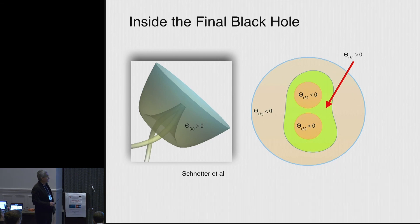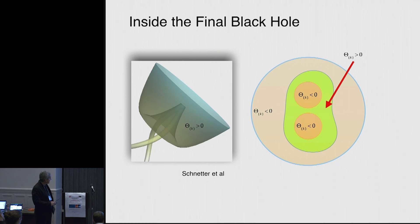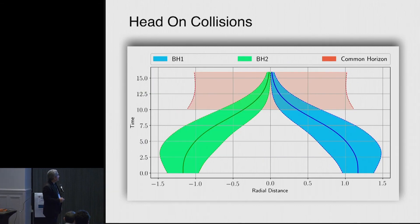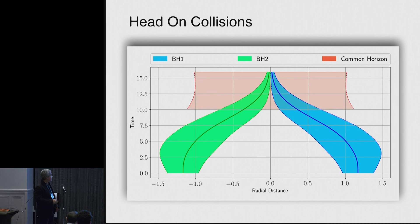When you have the instantaneous appearance of the common horizon, you not only have the apparent horizon up here. You have an inner horizon that is basically hugging these other horizons inside. And here is in a space-time type of diagram. Here, for a head-on collision, you have the two black holes merging each other, and the region in which, the time at which you have the apparent horizon appearing.